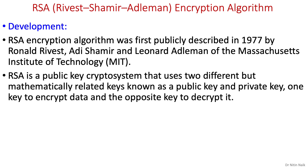RSA uses two different keys — a public key and a private key — to encrypt and decrypt data. Both the public key and private key can encrypt a message, and the opposite key from the one used to encrypt a message is used to decrypt it.